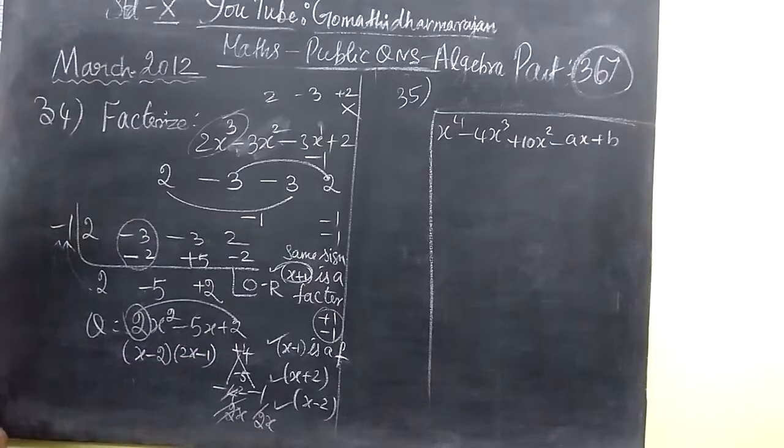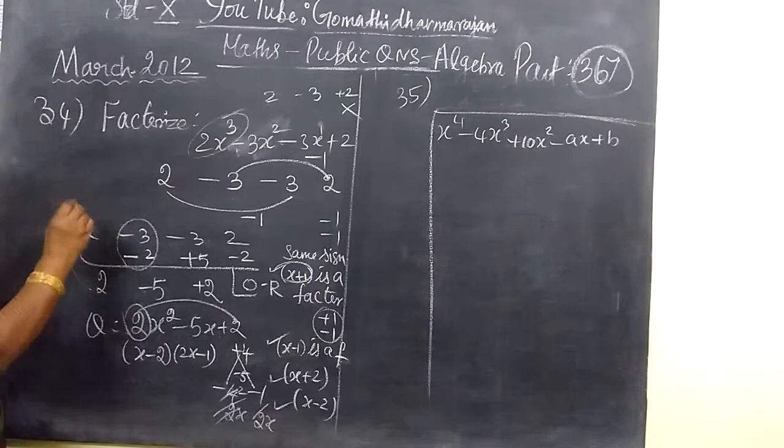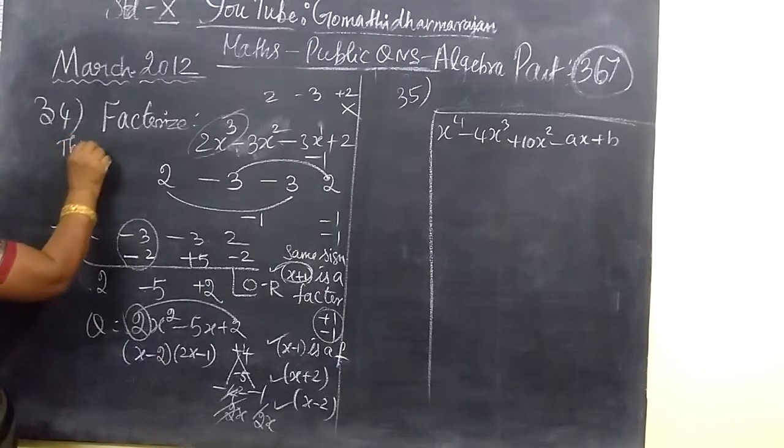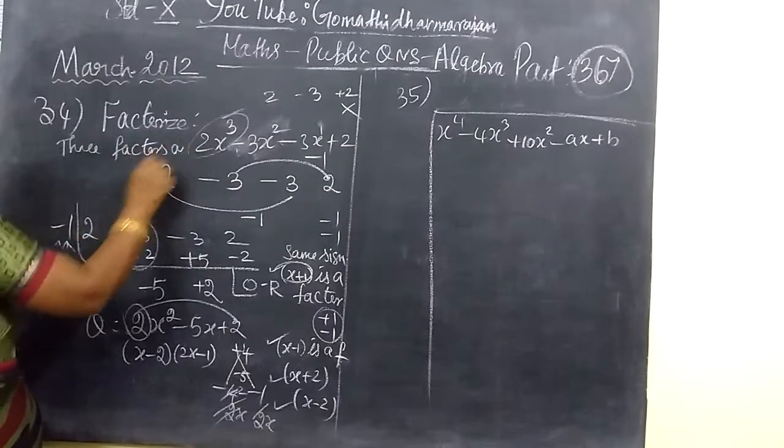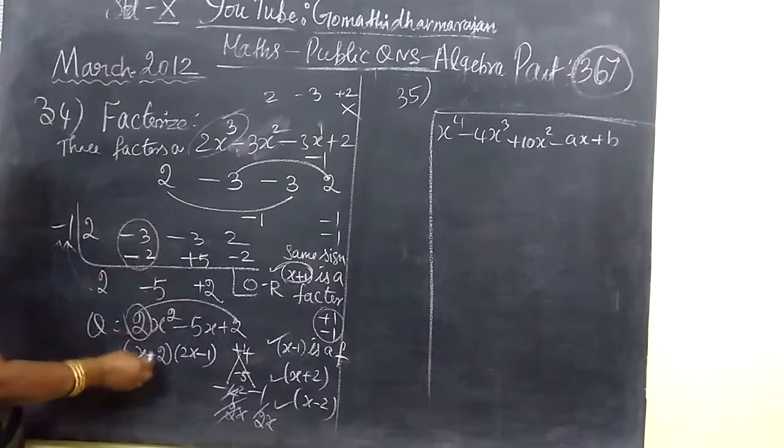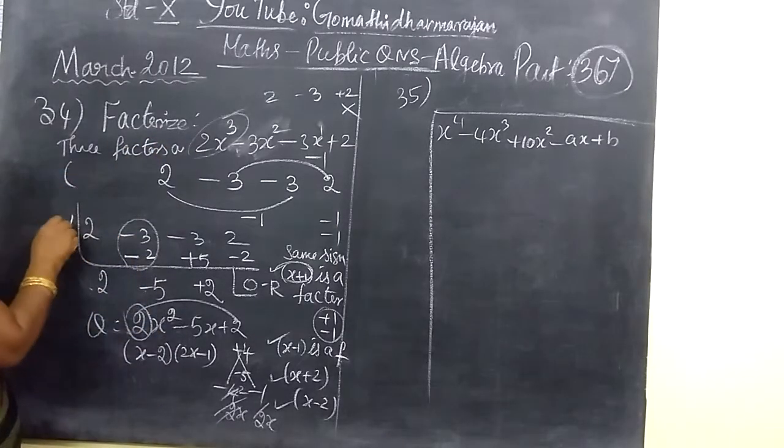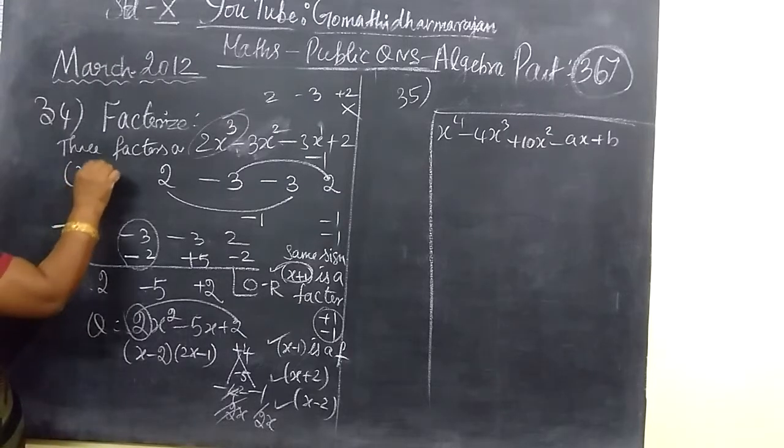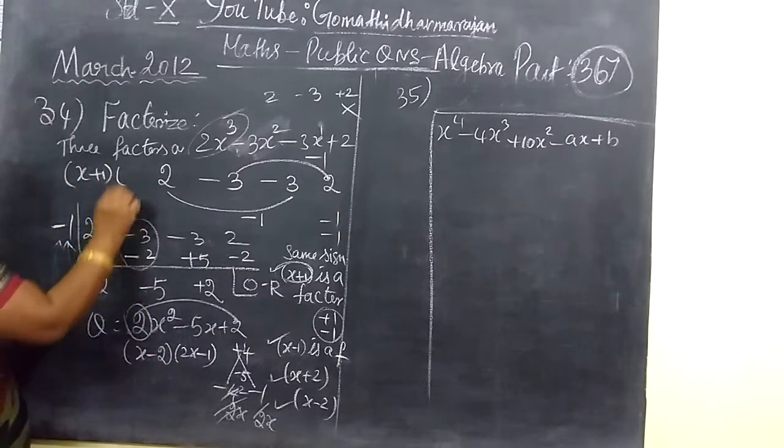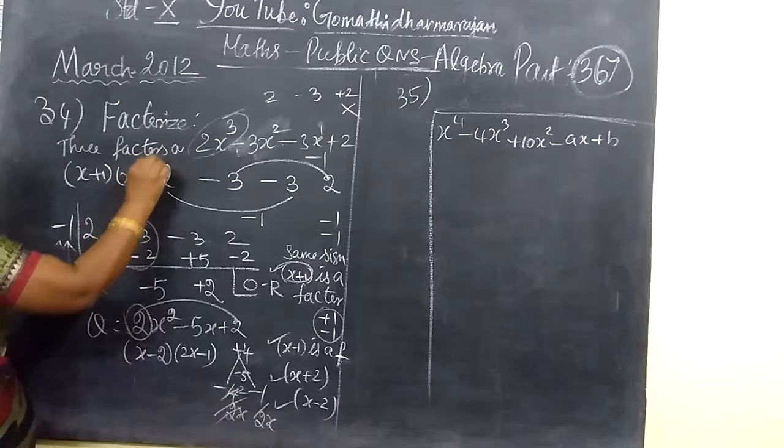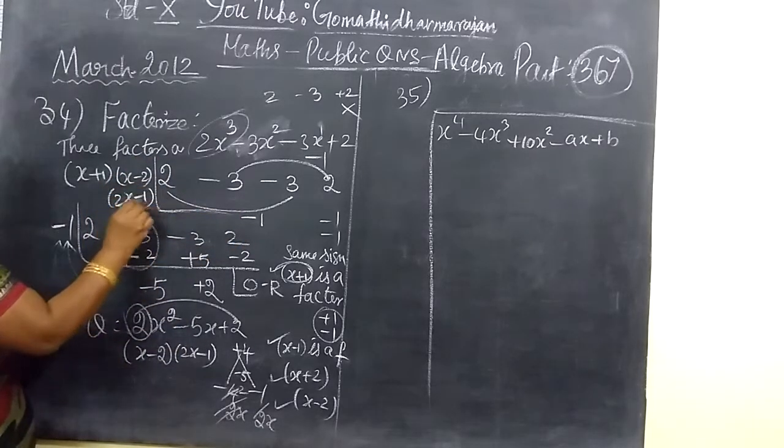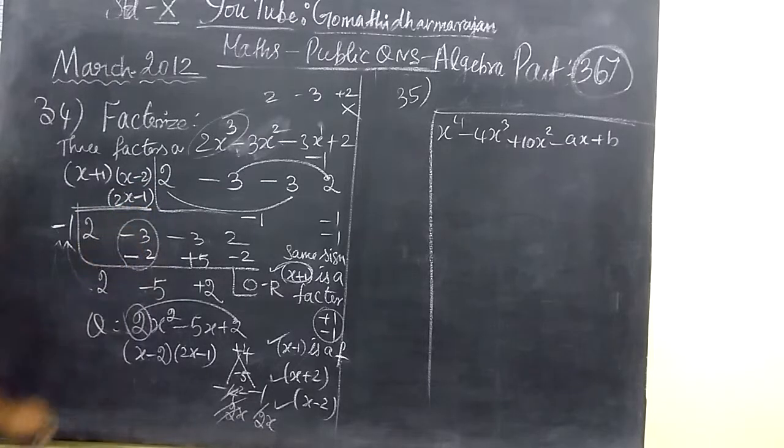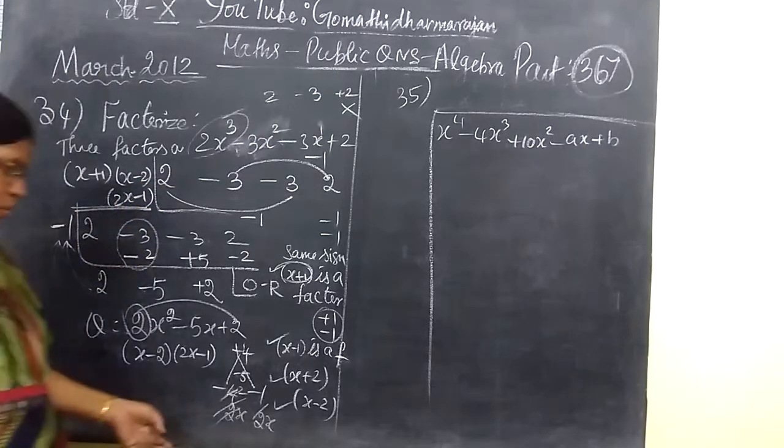Then 2x minus 1. Now you take and collect all the 3 factors. The 3 factors are: first opposite sign, x plus 1. Then another one is x minus 2. Then the last one, 2x minus 1. So these are all the 3 factors.